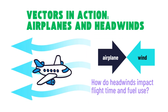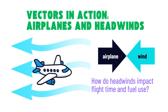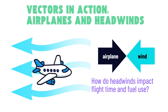To understand how vectors matter in real life, let's hop on an airplane. Suppose the plane is flying forward, but a strong wind, called a headwind, is blowing directly against it. Take a look at the diagram. Can you figure out how this headwind will change the plane's travel time and fuel use?